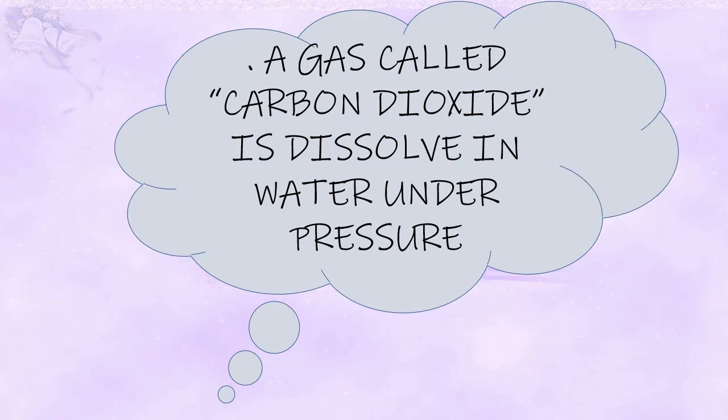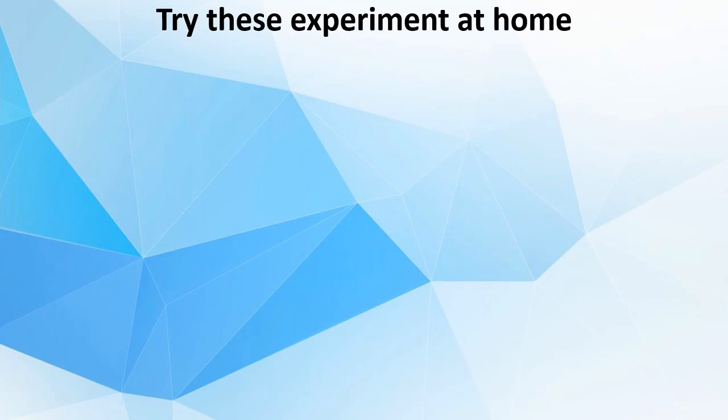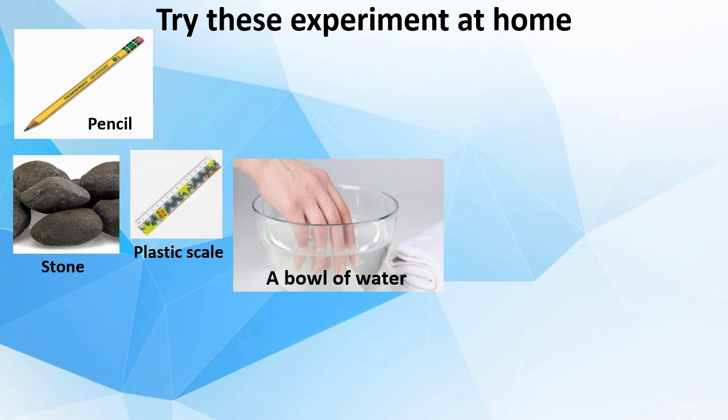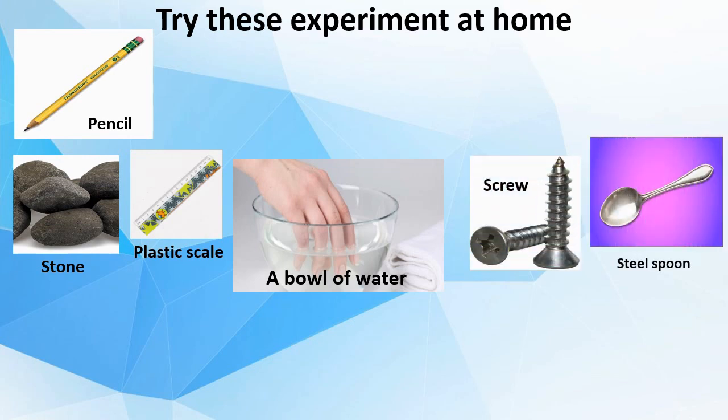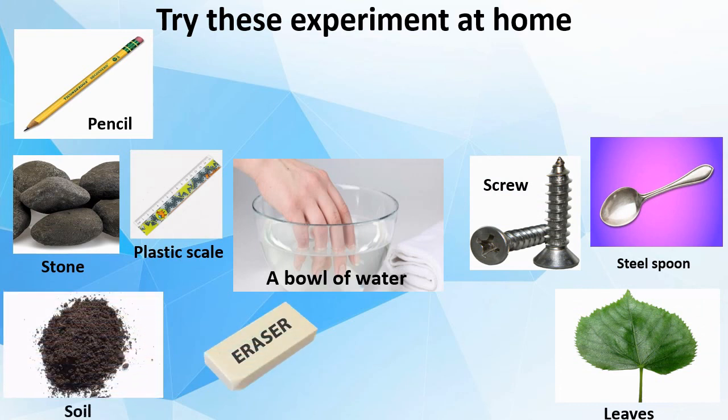Let's learn the next concept: things that sink or float in water. Students, try this experiment at home. It's very easy. The things you need are a bowl of water, plastic scale, screw, steel spoon, leaves, soil, eraser, nail, plastic spoon, sharpener, and coin.